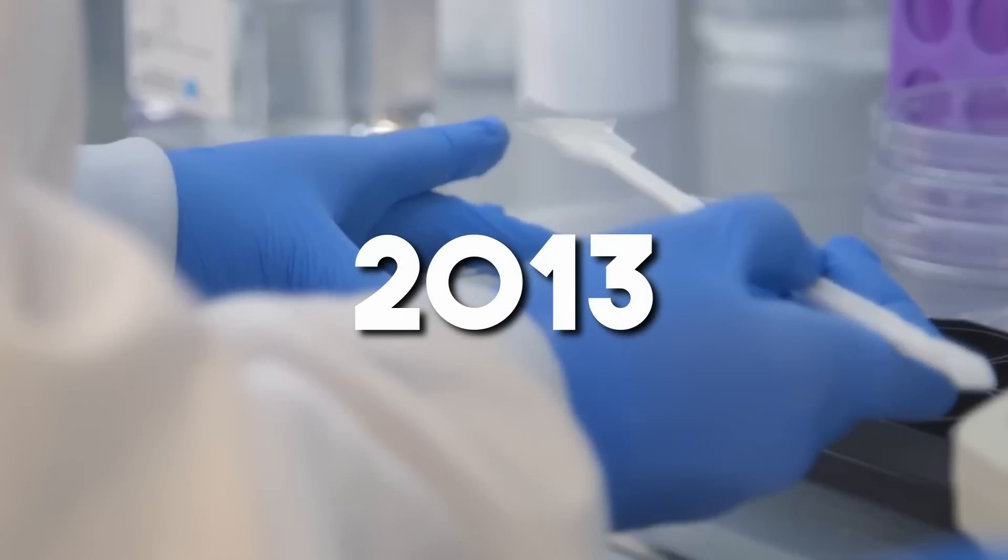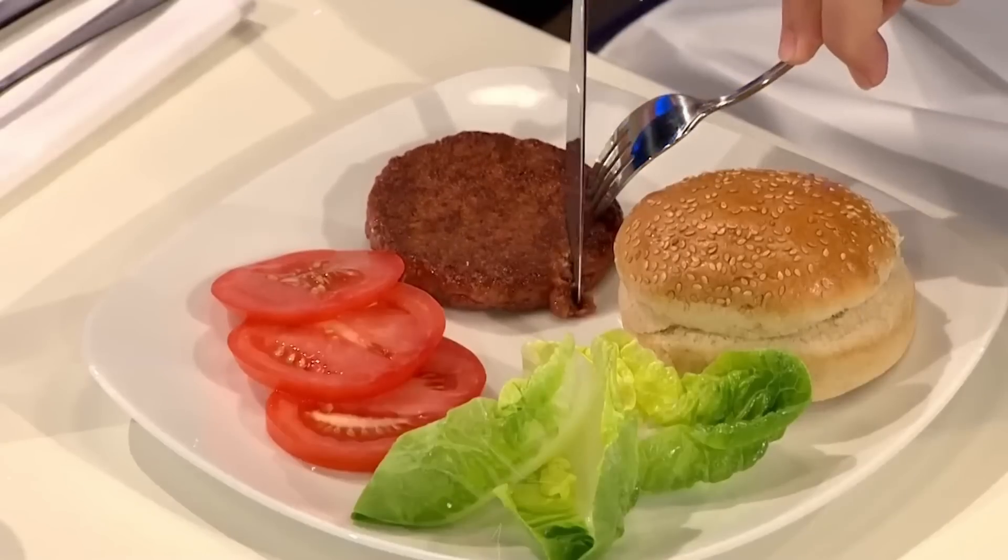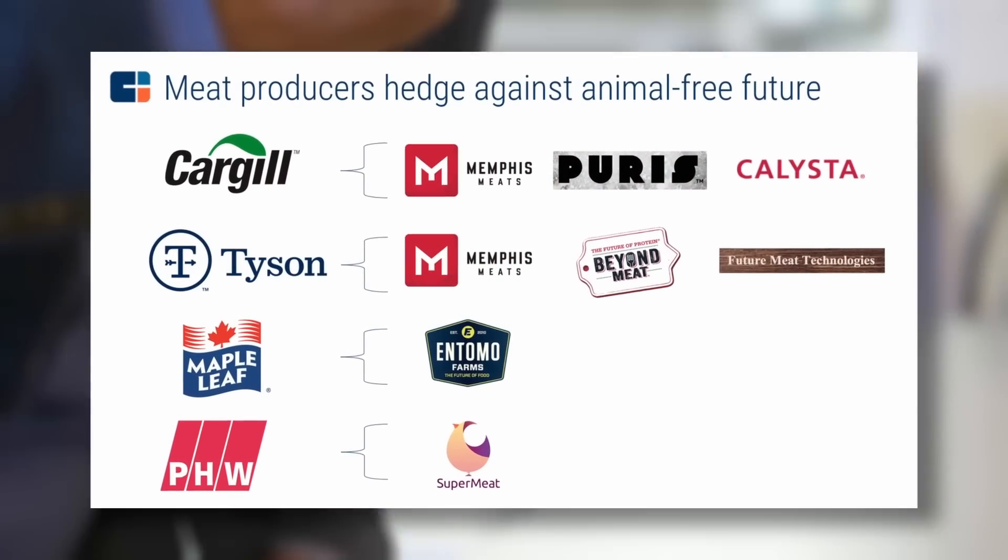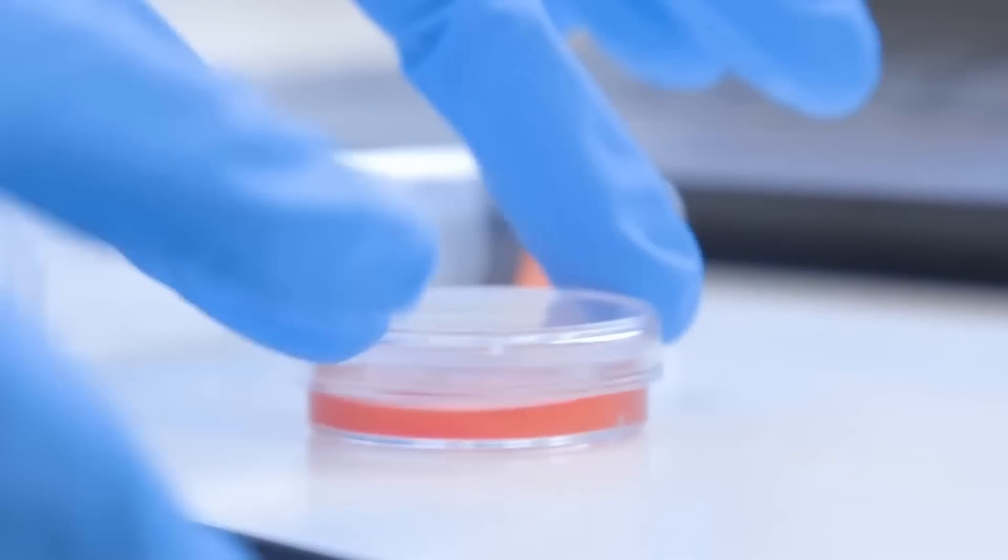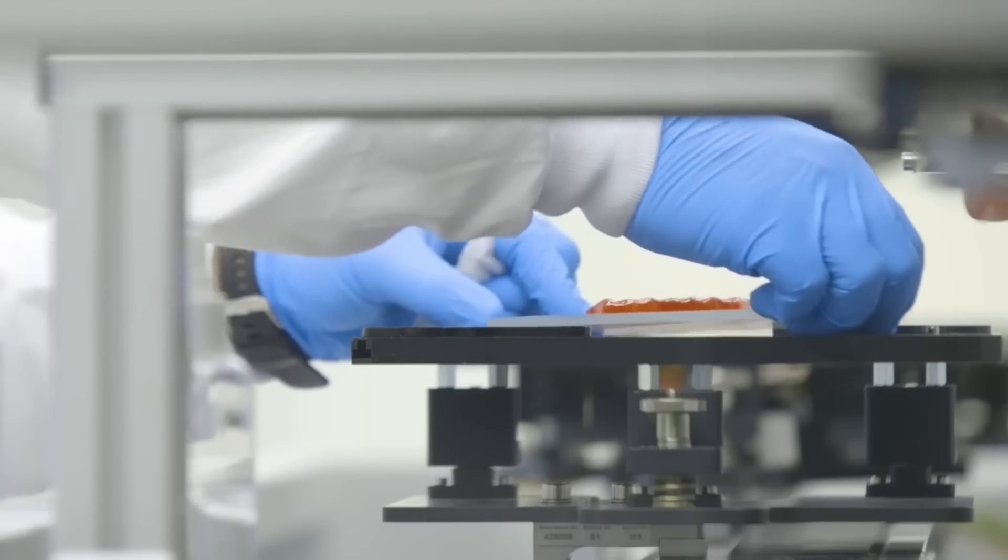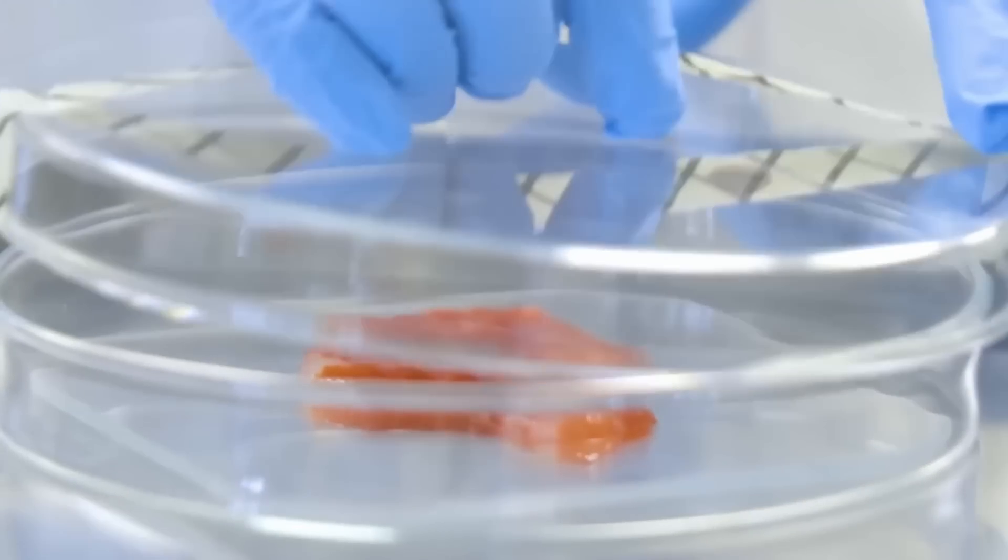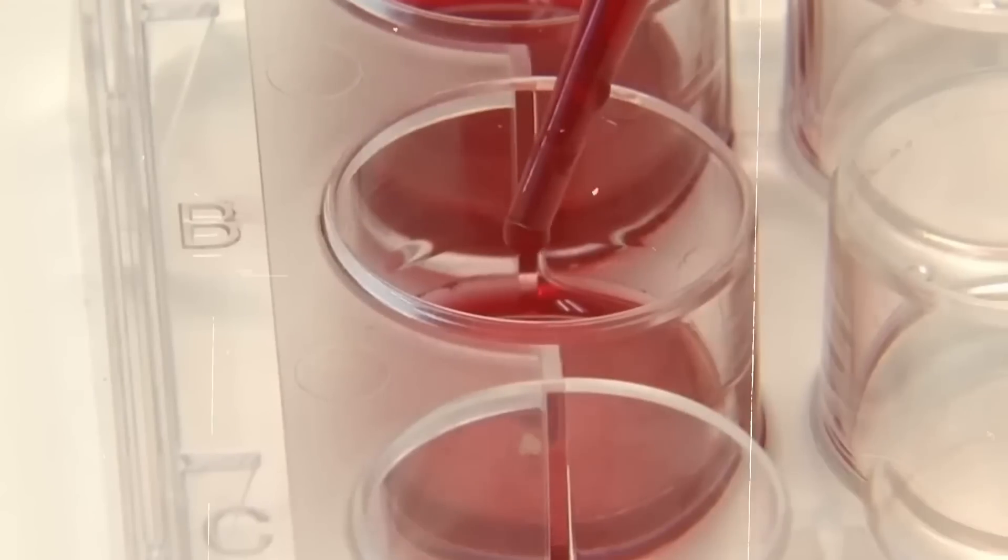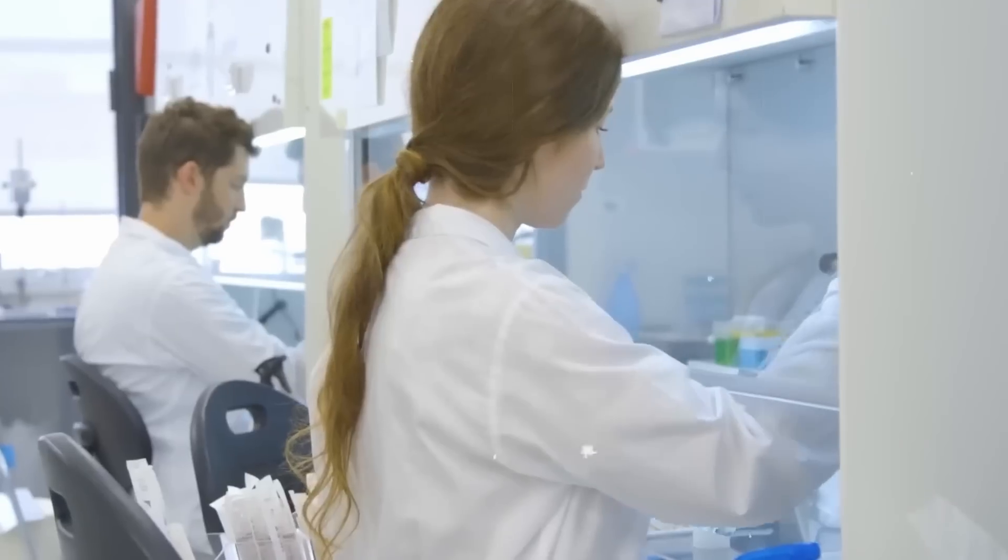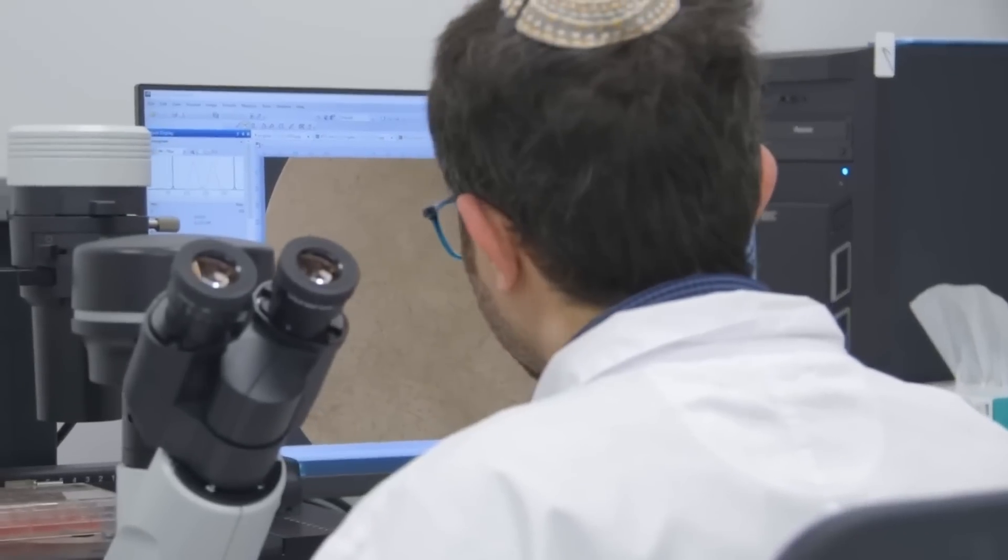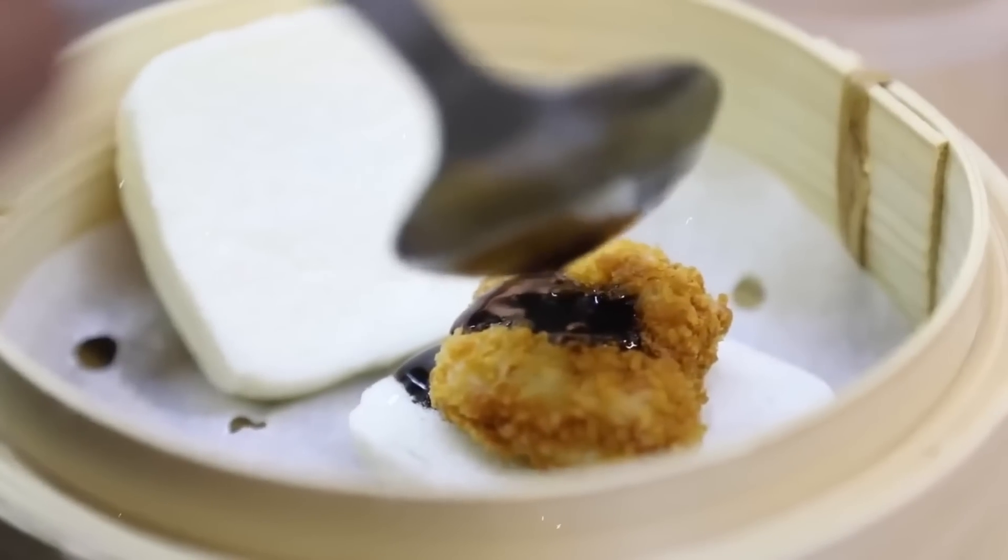In 2013, Dutch scientist Mark Post showcased the world's first lab-grown burger, marking the inception of an industry that has since seen rapid growth. With over 60 companies worldwide investing in cultivated meat production, the sector has attracted substantial funding, with a focus on creating a wide range of cultivated meat products. Regulatory approval, exemplified by the sale of lab-grown chicken nuggets in December 2020, underscores the viability and potential of cultivated meat to revolutionize the food industry.